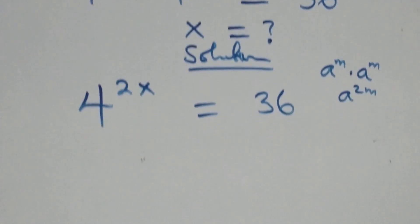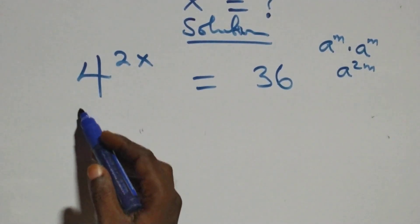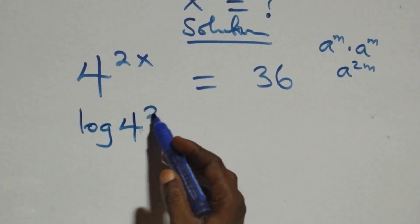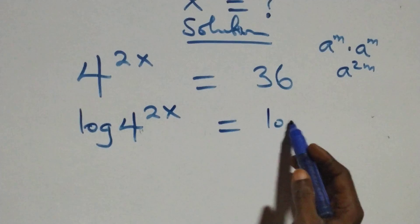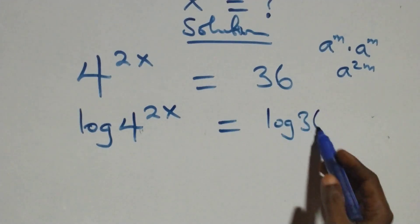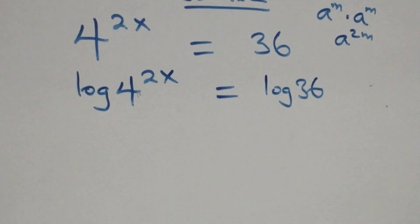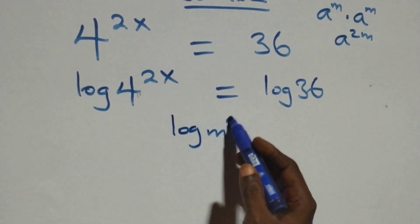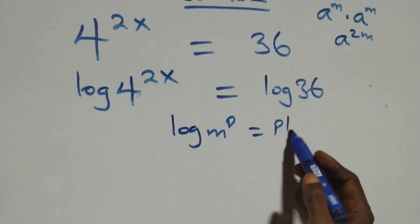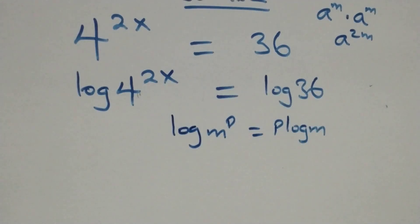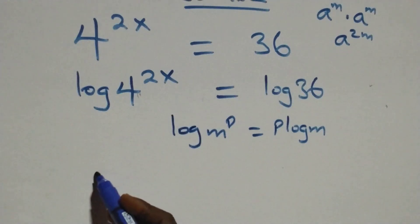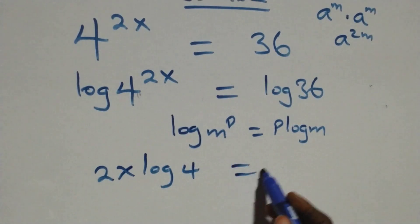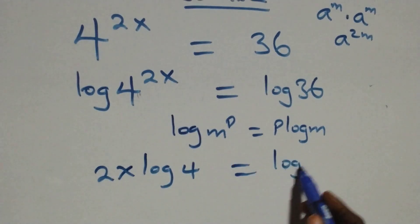The next step here, we take the log on both sides. That is, we have log 4 raised to power 2x equals to log 36 on this side. And here we apply the power rule of logarithms: when we have log m raised to power p, this is the same as p log m. So all we have here becomes 2x log 4 equals to log 36.